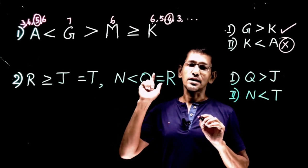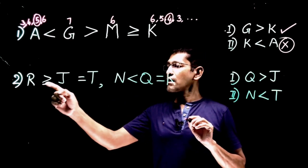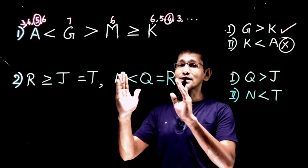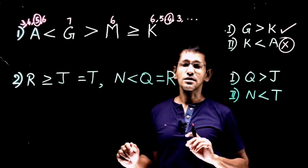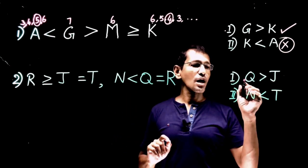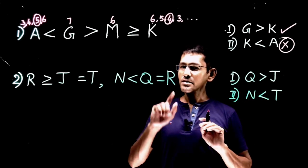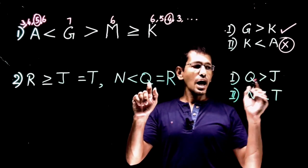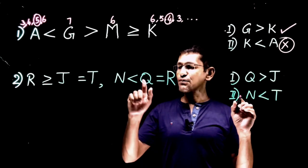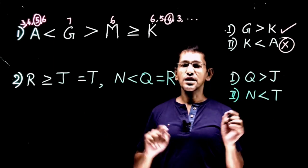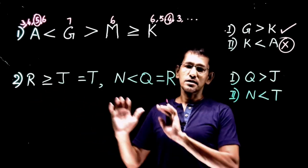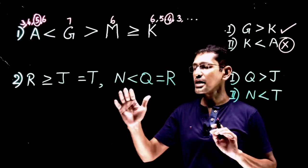Now let's look at question two. We have two statements: r is greater than or equal to j, and j equals t. The second statement is n is less than q, and q equals r. The conclusions are: q is greater than j, and n is less than t. Since q is from the second statement and j is from the first, and n is from the second while t is from the first, we need to combine these two statements.